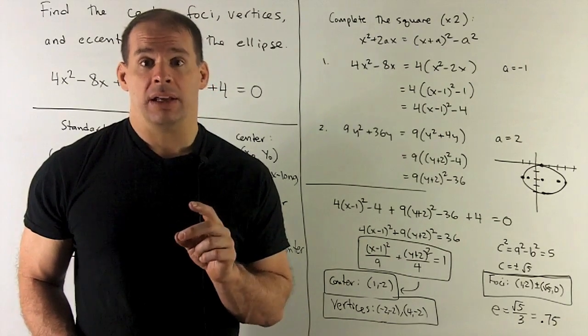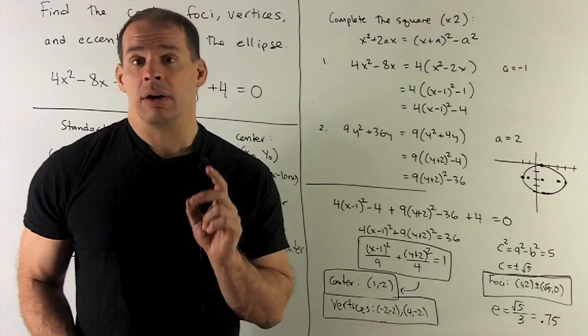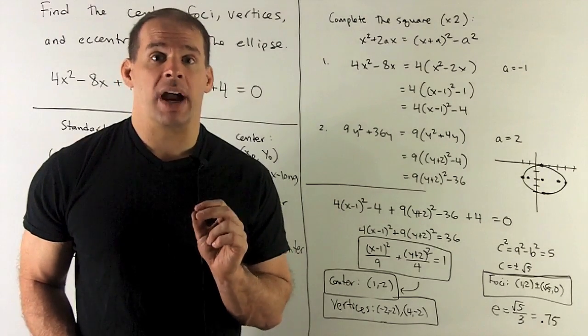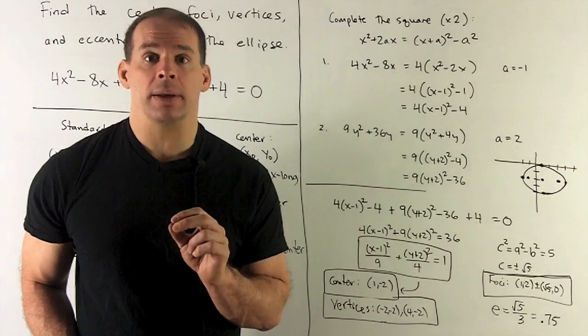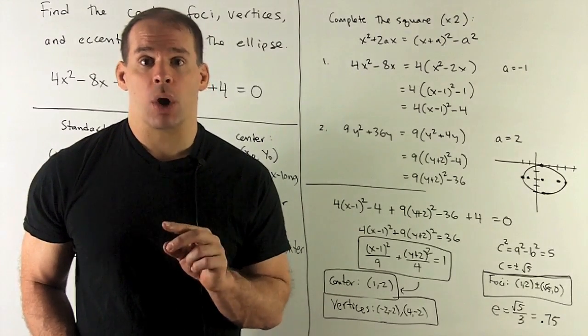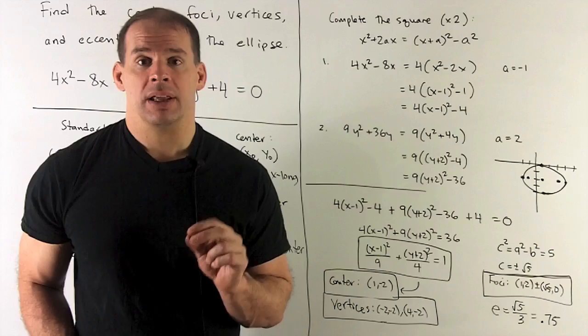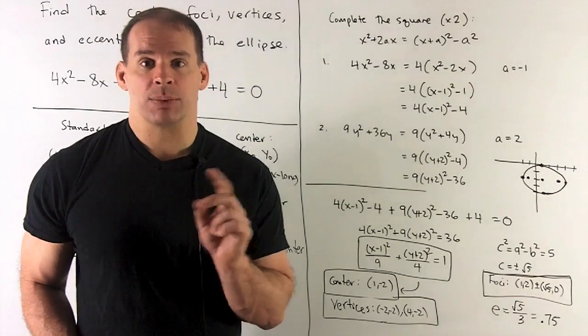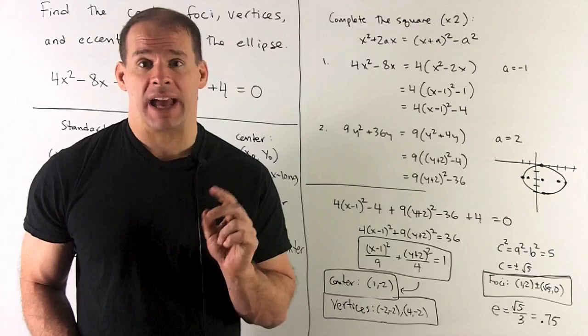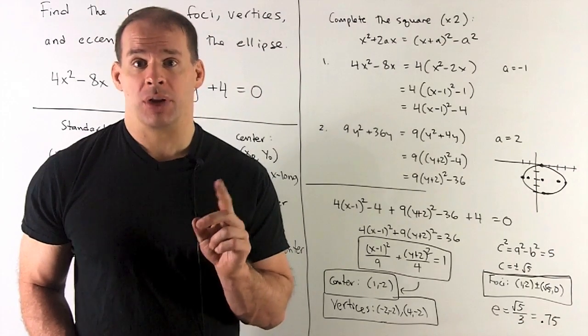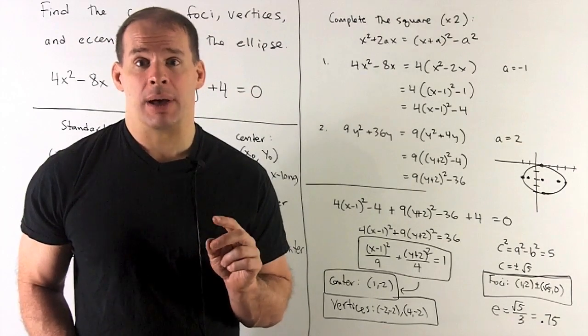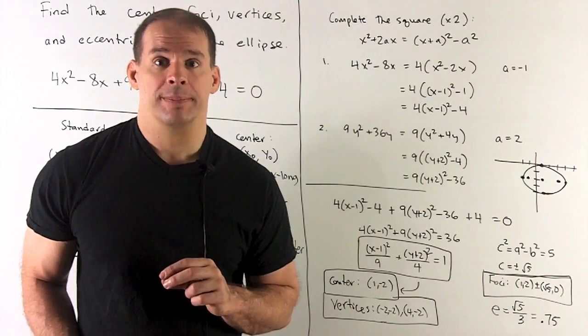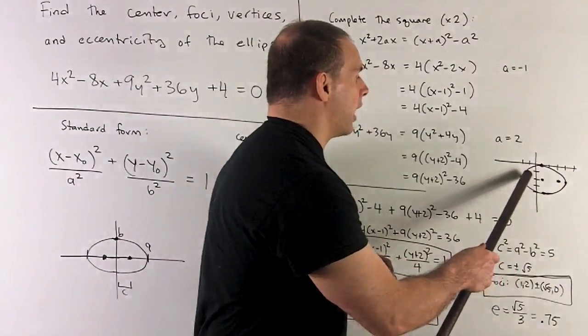Now, we're going to need to get c for our foci and the eccentricity. We're going to solve c² = a² - b². It's going to be 9 - 4. So, c = √5. If I want the foci, I'm going to take our center, add and subtract √5 to the x value. That's going to be 1 ± √5, -2. Those are the points for our foci.